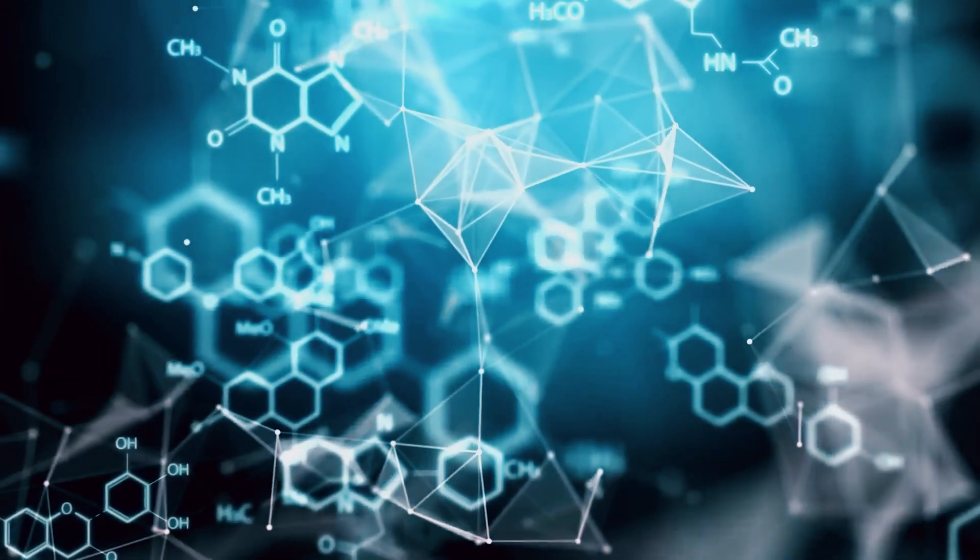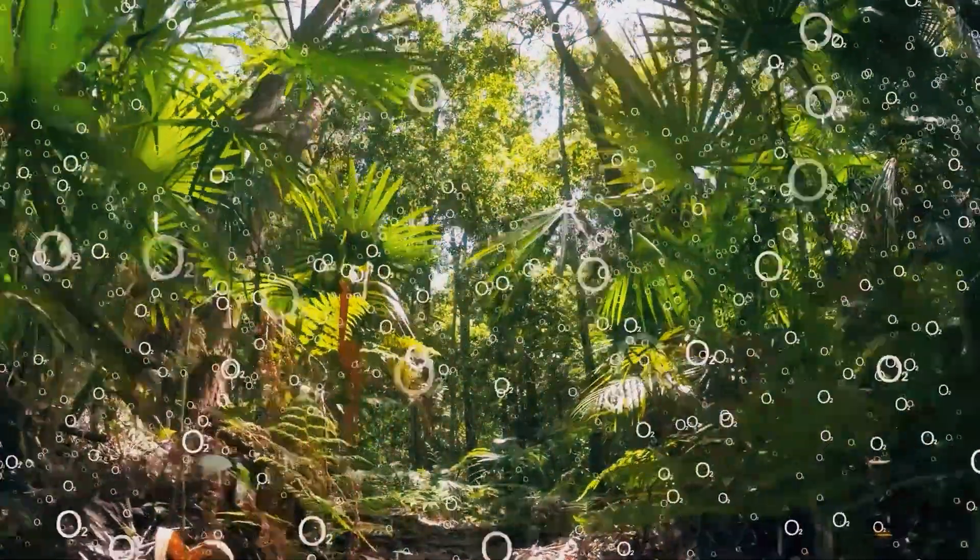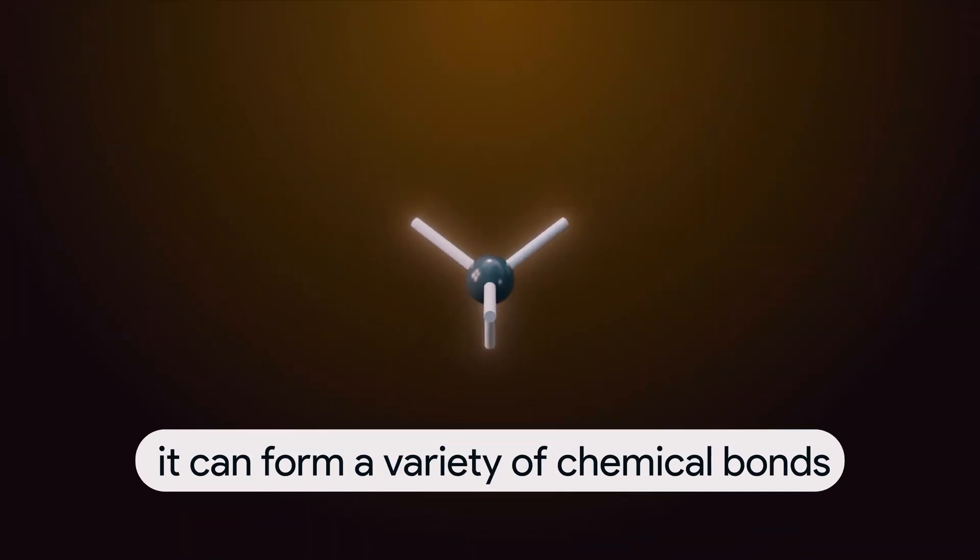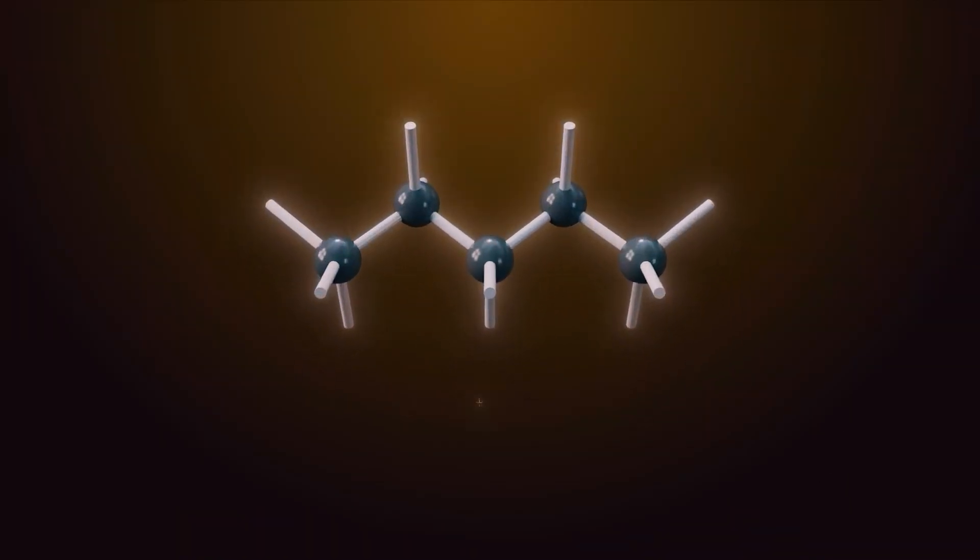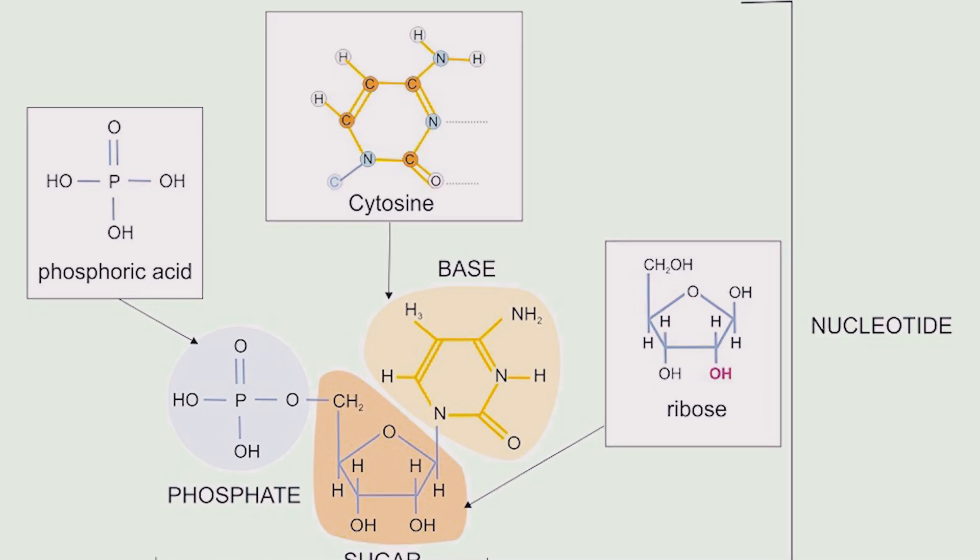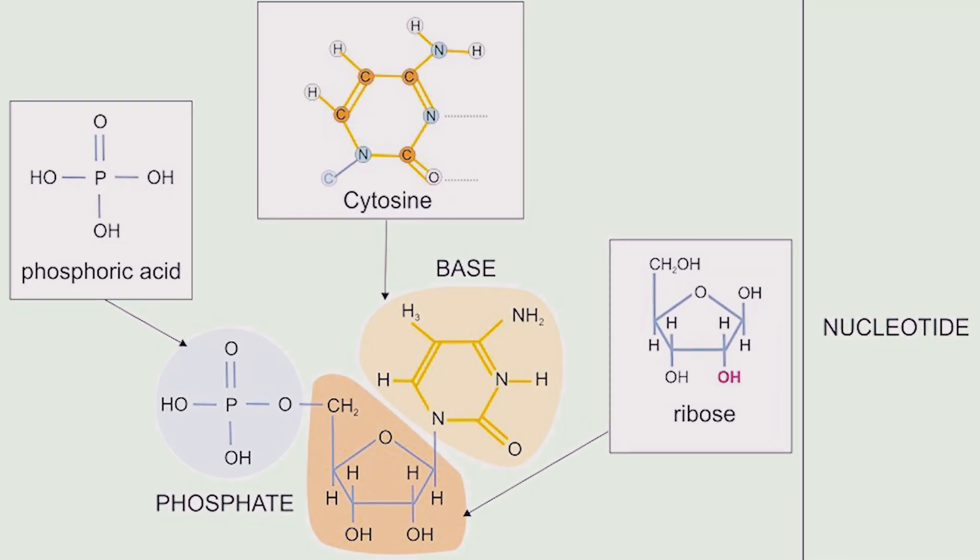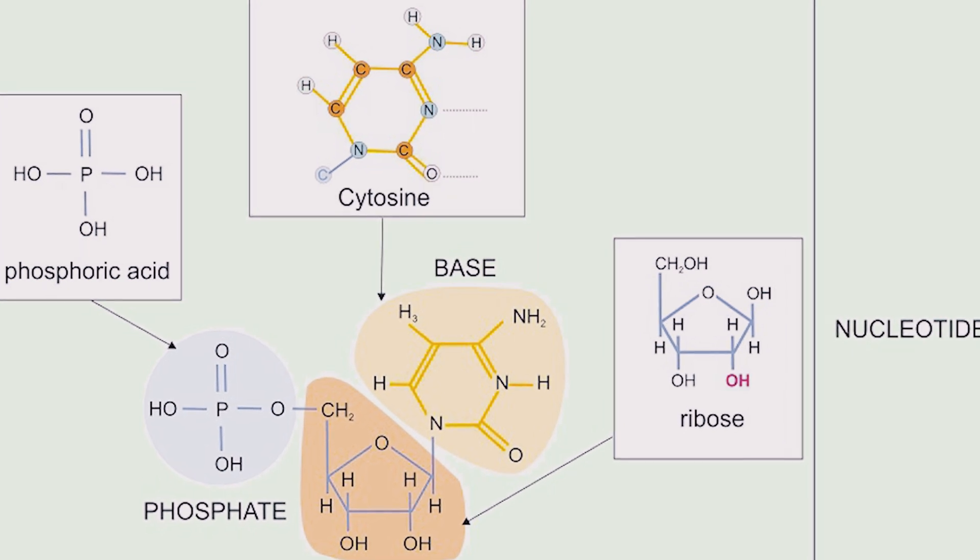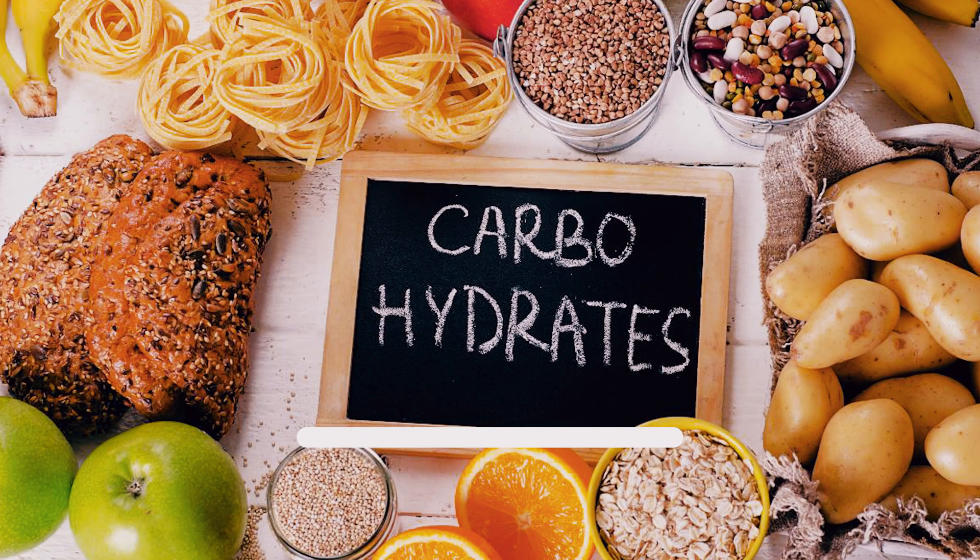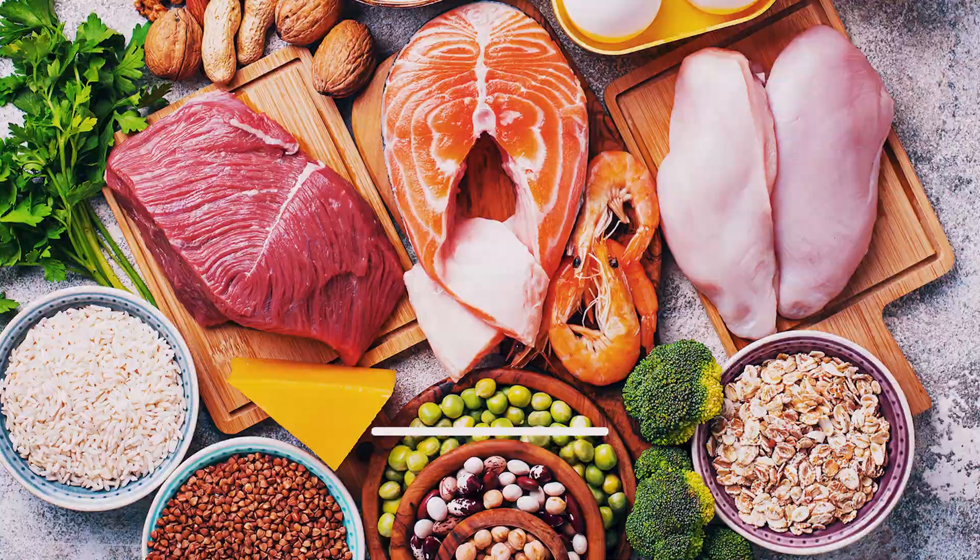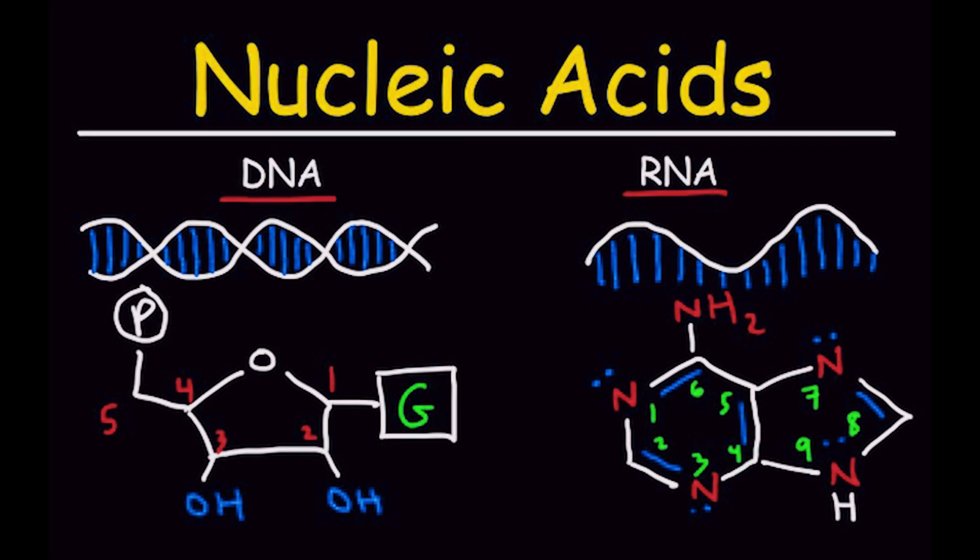Carbon has several unique properties that make it ideal for life. Firstly, it can form a variety of chemical bonds, including single, double and triple bonds, as well as ring structures. This allows carbon to create a vast array of complex molecules, such as carbohydrates, lipids, proteins, and nucleic acids, which are necessary for life.